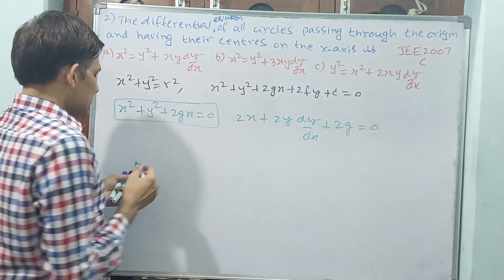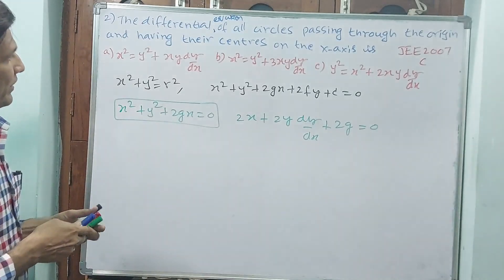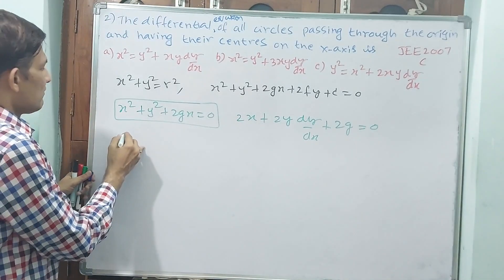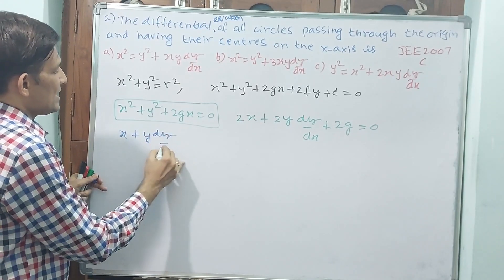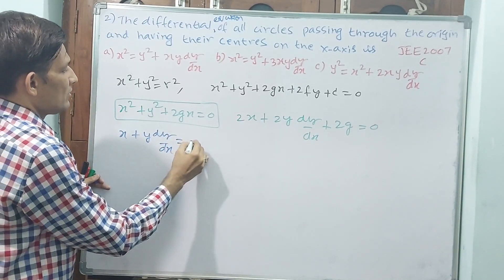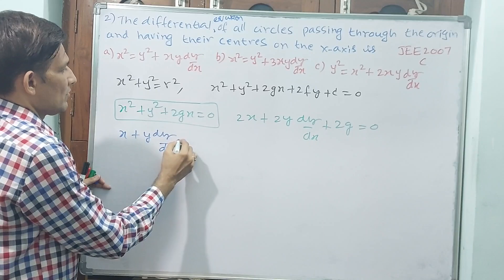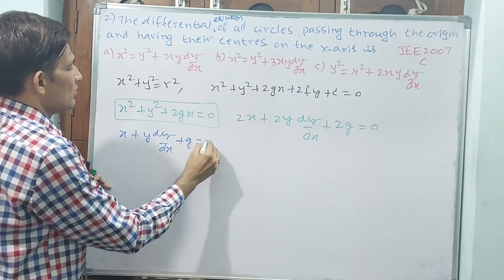Okay. Now, you can cancel these twos. If I cancel these two, it will be like this. You see, x + y dy/dx + g = 0.